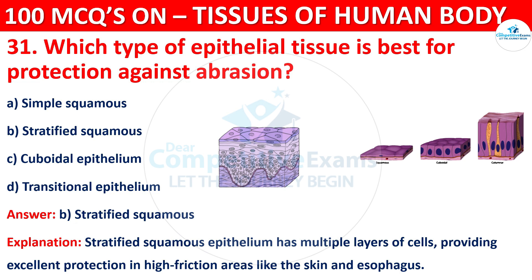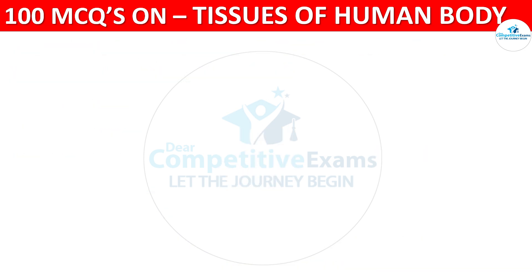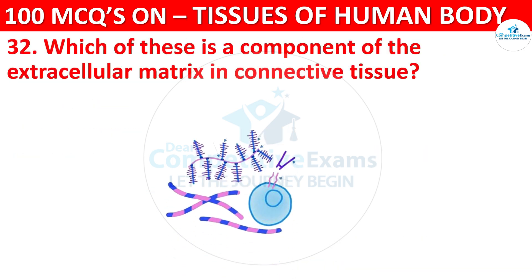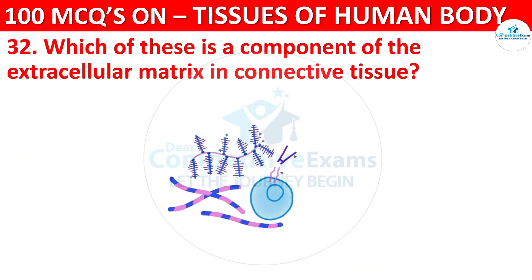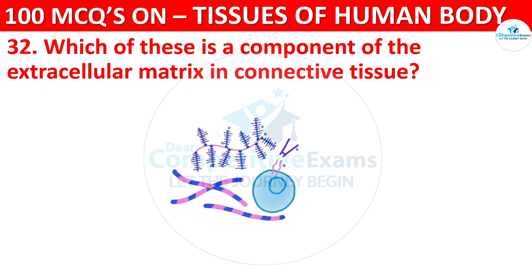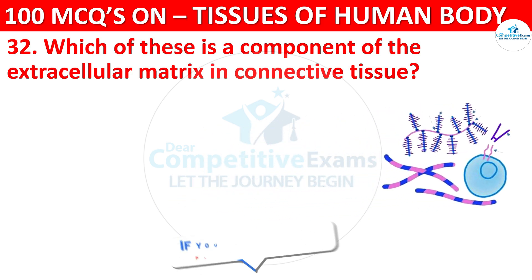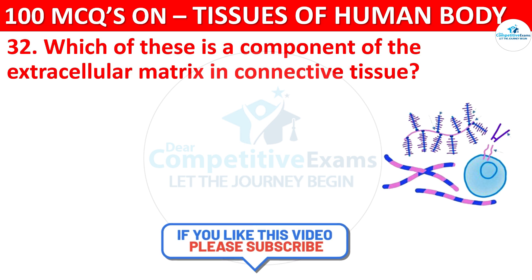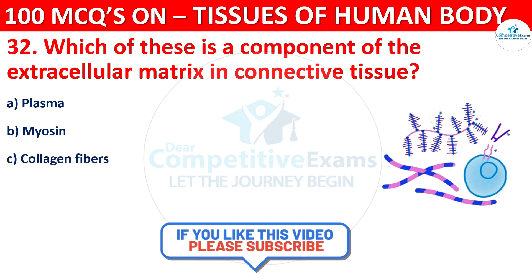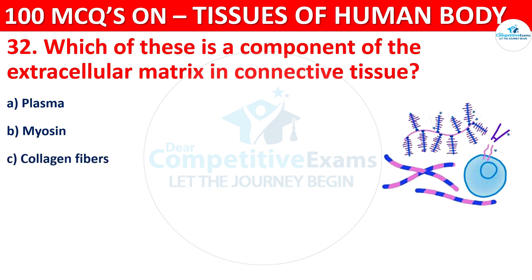Question number 32. Which of these is a component of the extracellular matrix in connective tissue? Options are Plasma, Myosin, Collagen Fibers, or Neurons.